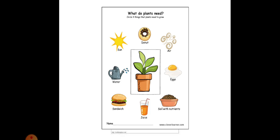Here what do plants need to grow? We have so many things here. Starting from donut, air, eggs, soil with nutrients, juice, sandwich, water and sun. But does the plant need all of them? Oh no. Only a few of them. They are sunlight, water, soil with nutrients and air. Did you get it right? Oh well done.